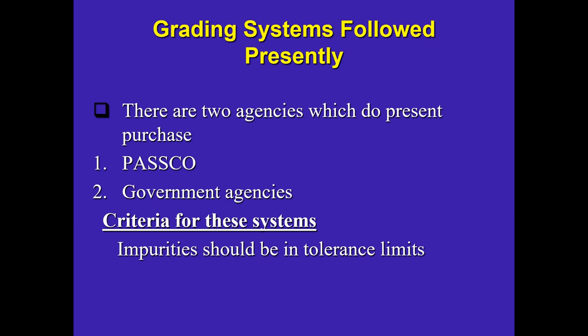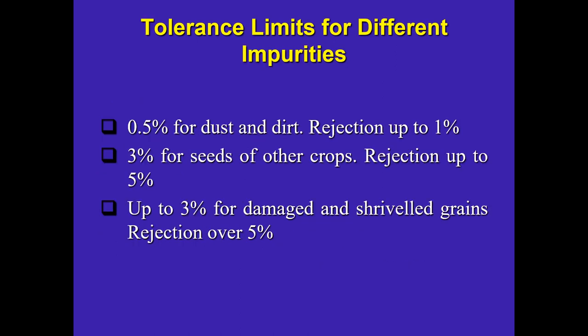Two agencies currently pursuing the grading system in Pakistan are PASCO and other government agencies. These agencies have identified tolerance limits for different impurities. For example, the limit for dust and dirt should be 0.5%, and if it reaches 1%, the wheat should be rejected.